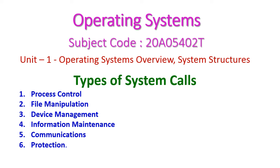Hello friends, welcome to today's operating system class. In today's class we will discuss the types of system calls that come under the first unit. In the last class we have seen what a system call is and how it is used to access system resources through system call interfaces. The different categories of system calls are: process control, file manipulation, device management, information maintenance, communication, and protection.